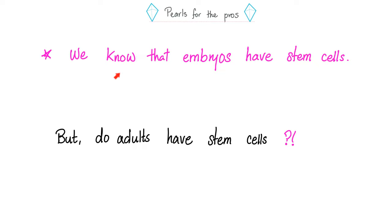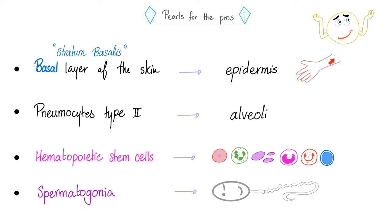Do adults have stem cells? Yes. The stratum basalis of the skin divides to produce new epidermis — that's a stem cell. Pneumocyte type 2 has two functions: making surfactant and acting as a stem cell for lung alveolar cells. Your hematopoietic stem cells in the bone marrow dish out red blood cells, white blood cells, and platelets every single day. Spermatogonia dish out millions of sperm every day — that is also a stem cell.